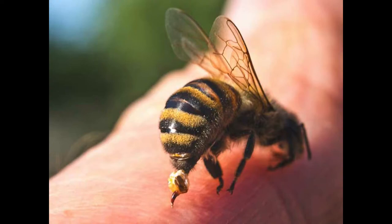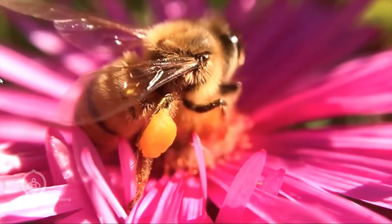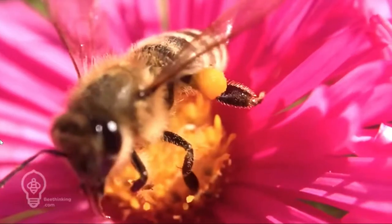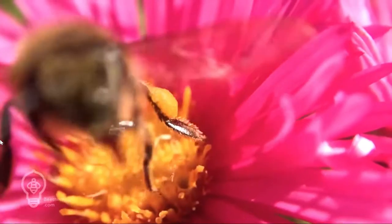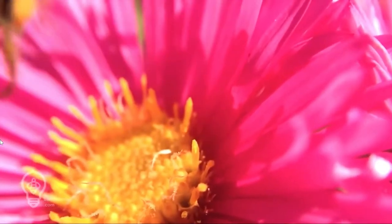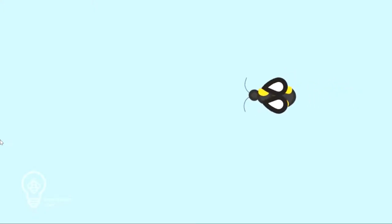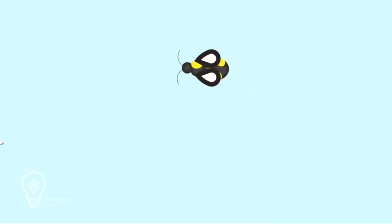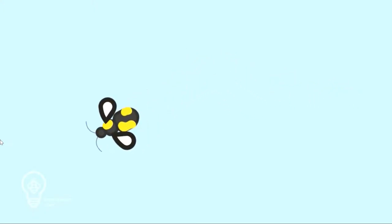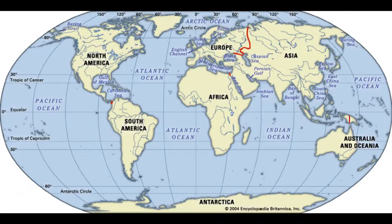Feared for the painful stings, bees having 20,000 documented species actually play a crucial role in balancing the Earth's ecosystem. Bees can be found on every continent except for Antarctica.